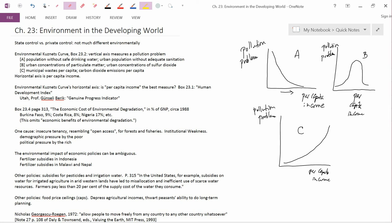But what the book points out is something about the U.S. On page 315, the authors write here, In the United States, for example, subsidies on water for irrigated agriculture in arid western lands, for example, Utah, have led to misallocation and inefficient use of scarce water resources. Farmers pay less than 20% of the supply cost of the water they consume.